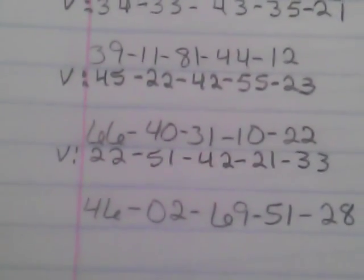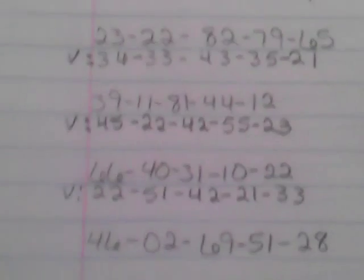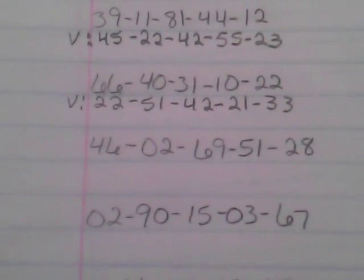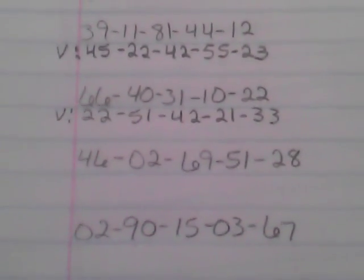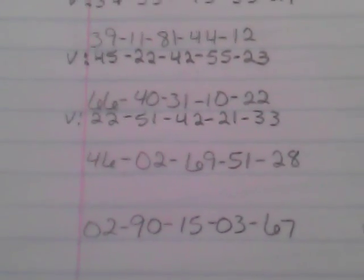Convert the next one. 66 is 22, 40 is 51, 31 is 42, 10 is 21, 22 is 33. There you have it: 22, 51, 42, 21, 33. See how you have five different groups here? That narrows it down. When you have five groups, you've just narrowed your lottery number group down to an estimated 20 numbers, out of not 90 numbers, you're now looking at 20 numbers.